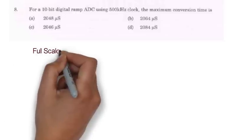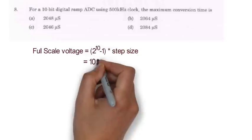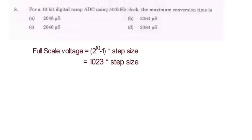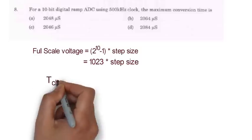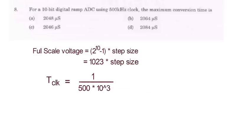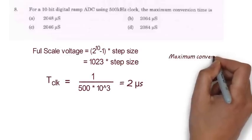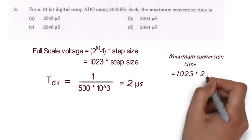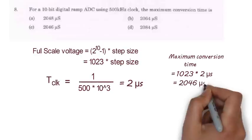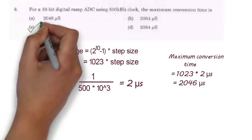So here full scale voltage will be 2 to the power 10 minus 1 that will be equal to 1023. Now time period of clock will be 1 divided by frequency that will be equal to 2 microsecond. Here since one comparison takes 2 microsecond so 1023 comparison will take 1023 into 2 that will be equal to 2046 microsecond. So option C is correct here.